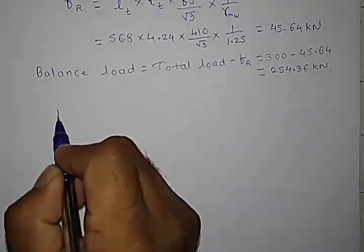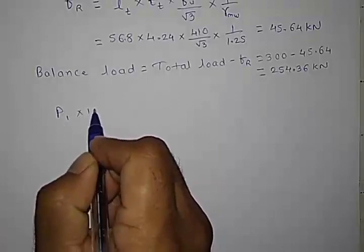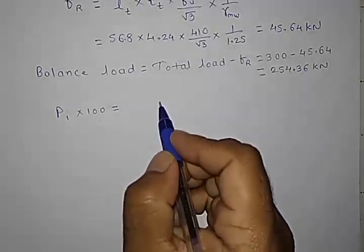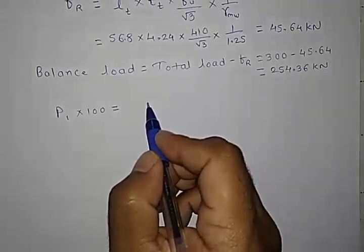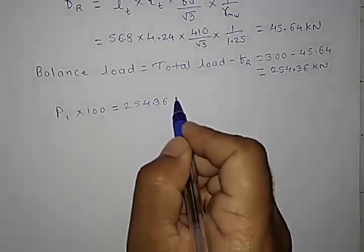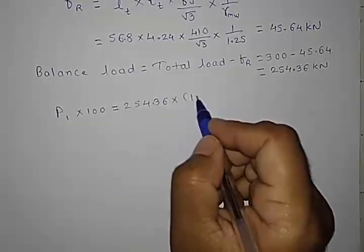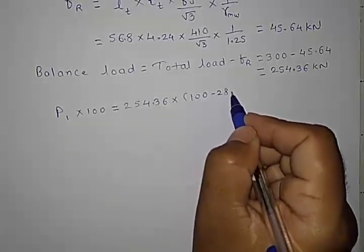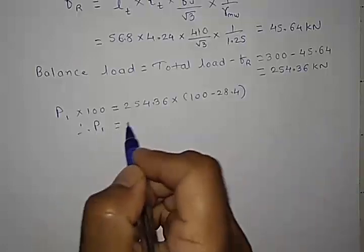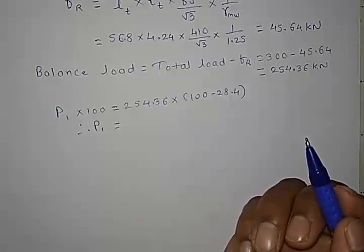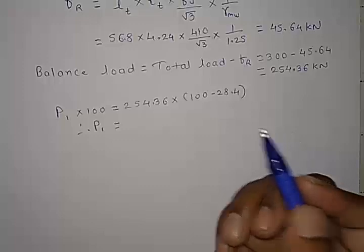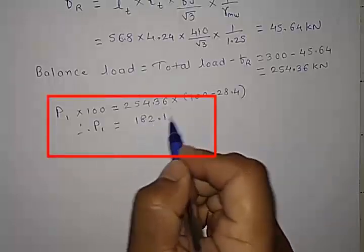So now in the same case, P1 multiplied by 100 is the total length, length of one leg, which is equal to the load of 254.36 which is going to act at the distance of 100 minus 28.4. So therefore P1 will be equal to 182.1 kN.